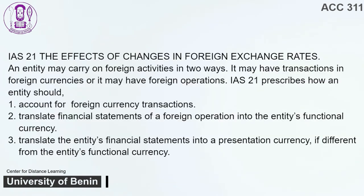IAS 21 — The Effects of Changes in Foreign Exchange Rates. An entity may carry on foreign activities in two ways: it may have transactions in foreign currencies or it may have foreign operations. IAS 21 prescribes how an entity should: 1. Account for foreign currency transactions. 2. Translate financial statements of a foreign operation into the entity's functional currency. 3. Translate the entity's financial statements into a presentation currency, if different from the entity's functional currency.